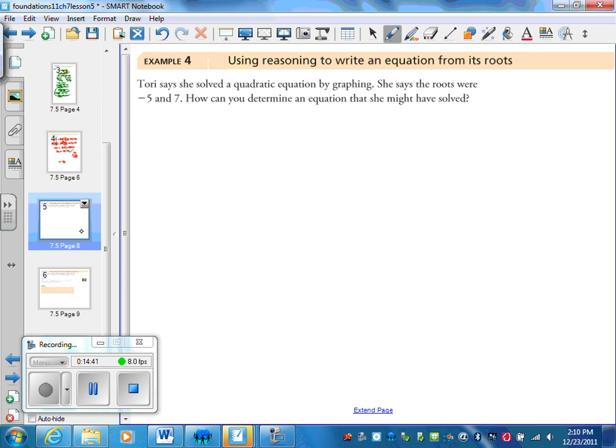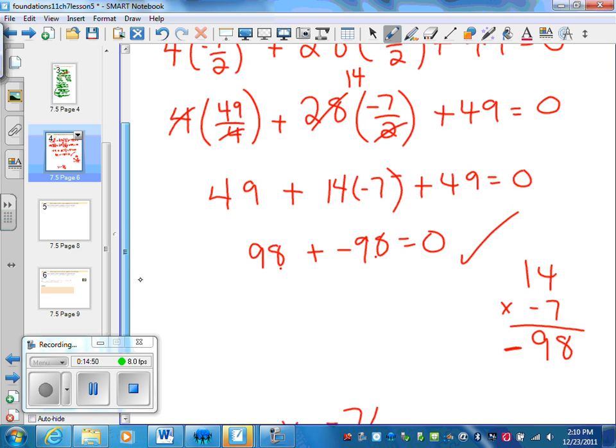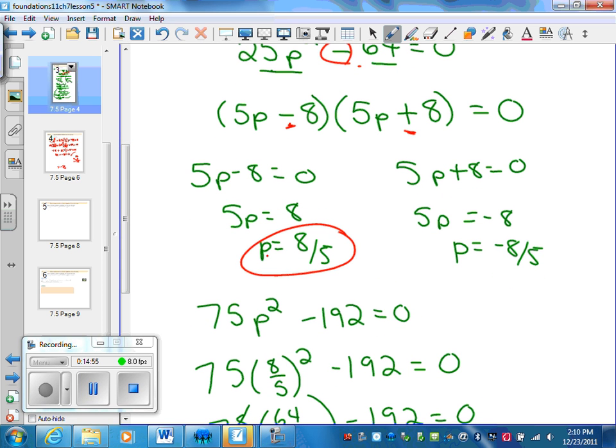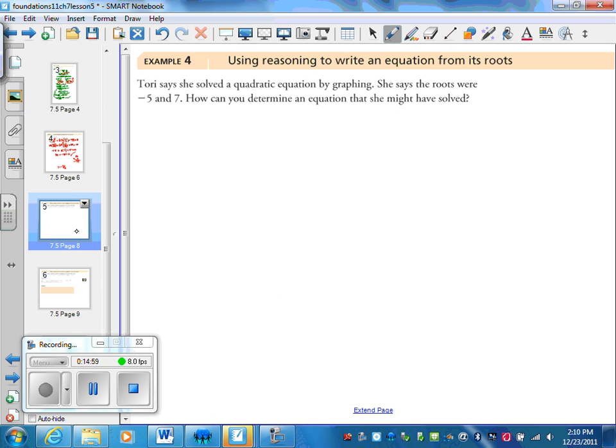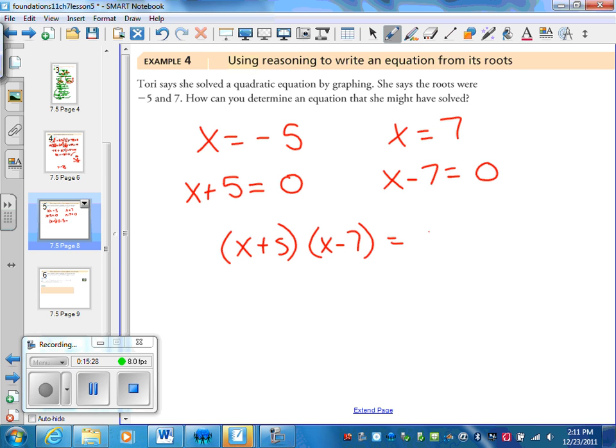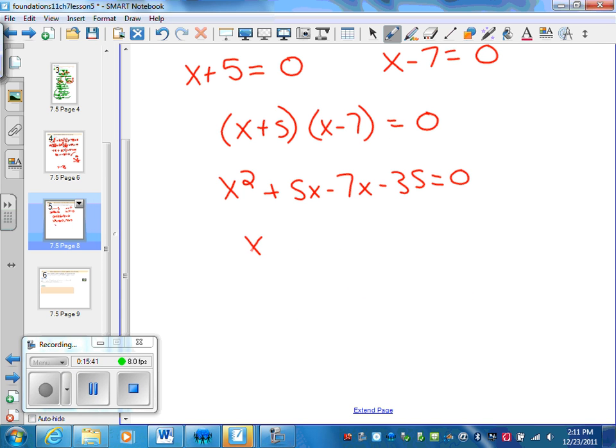Going backwards. Tori says she solved a quadratic equation by graphing. She said the roots were negative 5 and 7. How can you determine the equation? So what she's done is she's given us the last step. She's told us what x equals. So what we're going to do is we're going to now work backwards. So she's told us that x equals negative 5 and x equals 7. So now let's get these to be 0. Let's set them to be 0. x plus 5 equals 0. Oh, this one's a mistake. That should be plus 5. We're going to add 5 to both sides. Here we subtract 7 from both sides. So these are my two factors. The last step is we're just going to expand using FOIL. So we should get x squared plus 5x minus 7x minus 35 equals 0.